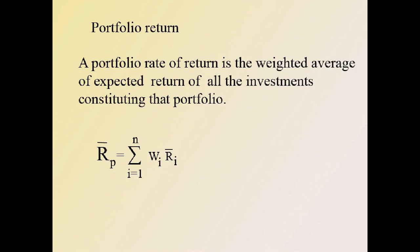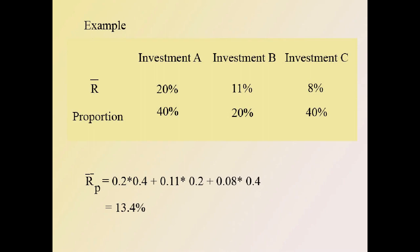A portfolio rate of return is the weighted average of expected returns of all investments constituting that portfolio. It can be calculated using the formula: R̄p = Σ(i=1 to n) wi × R̄i. For example, the expected returns of investments A, B, and C are 20%, 11%, and 8% with proportions of 40%, 20%, and 40%. Using the formula, the portfolio return is 13.4%.